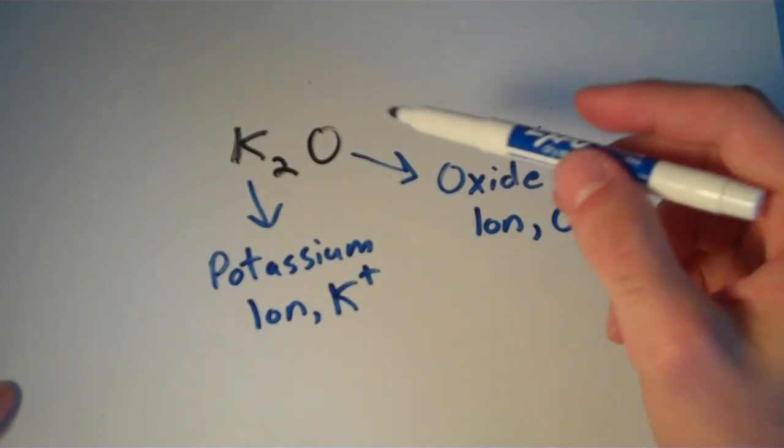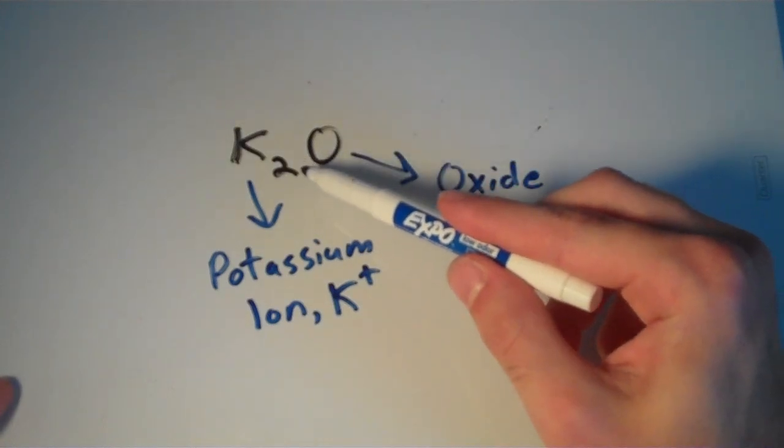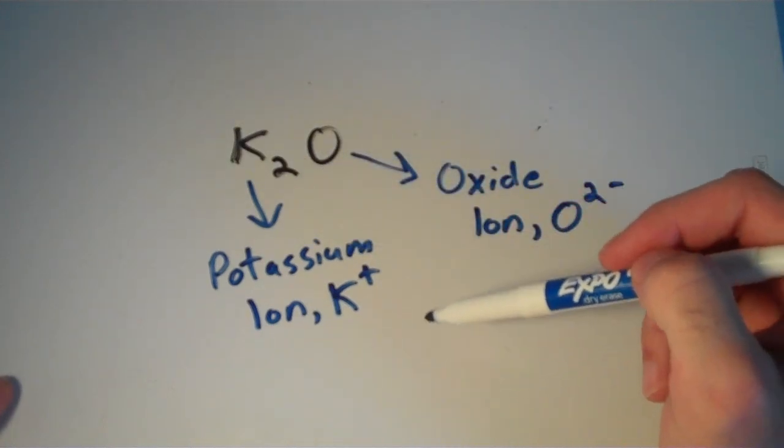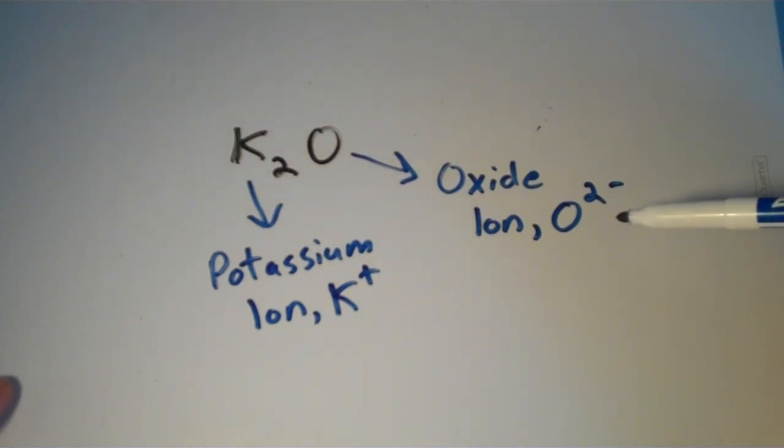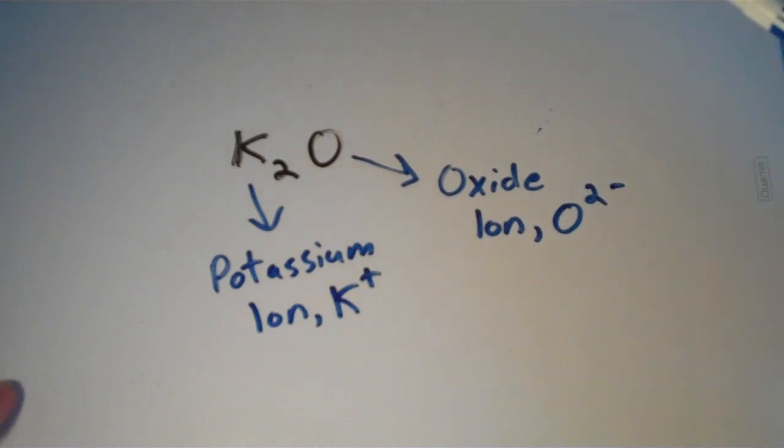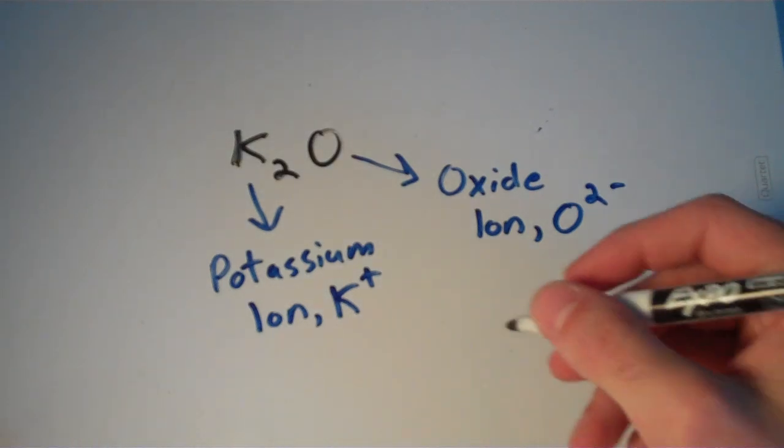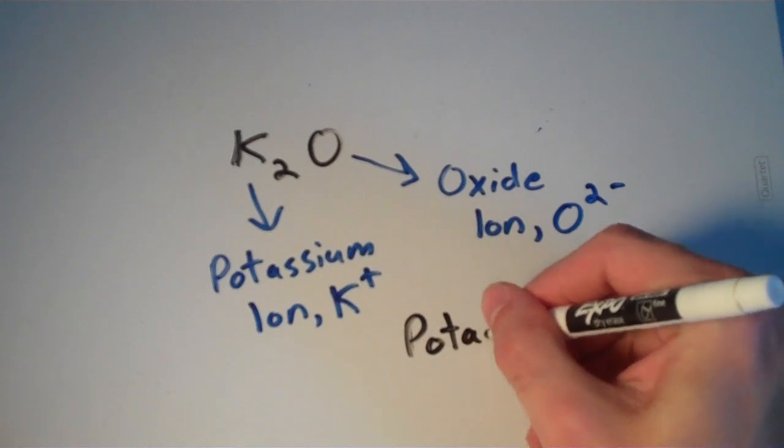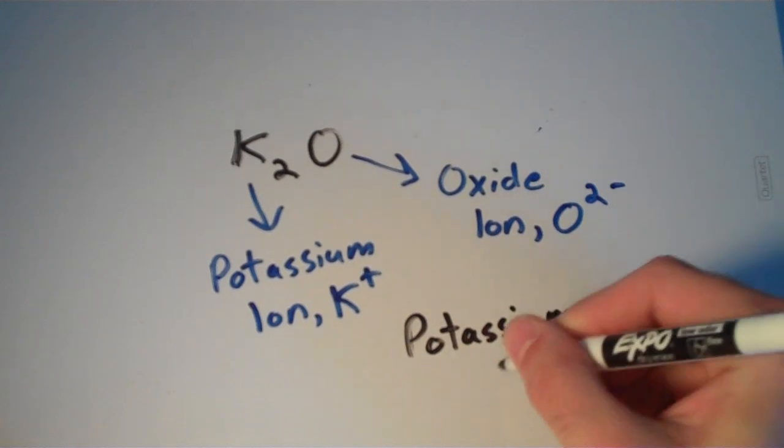Notice that we have two 1+ charge potassium ions that cancel out the 2- charge of the oxide ion so that this compound is overall charge neutral. So we have the potassium ion and we have the oxide ion. So the name of this compound would then be potassium oxide.